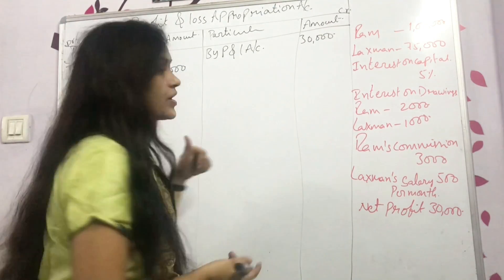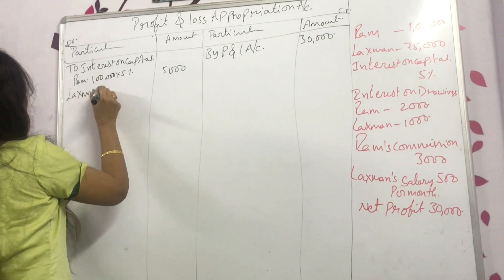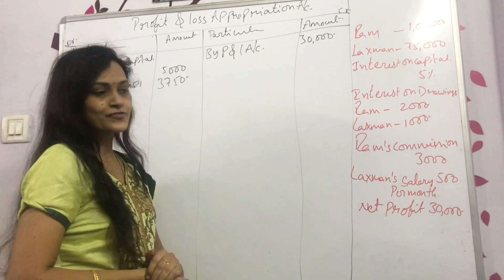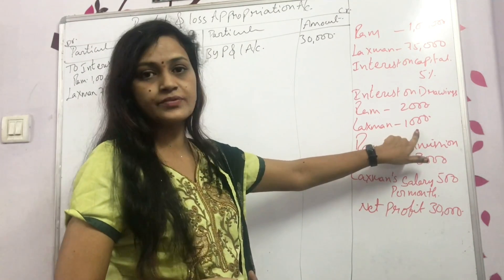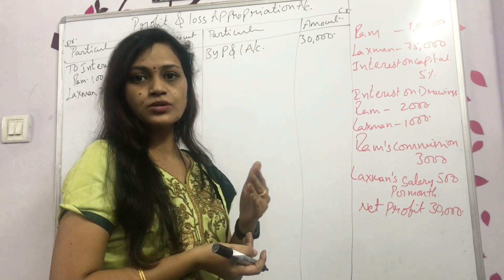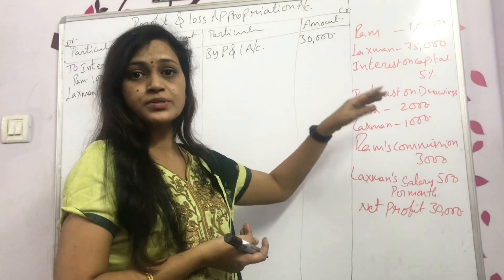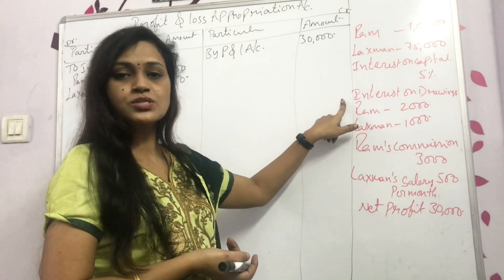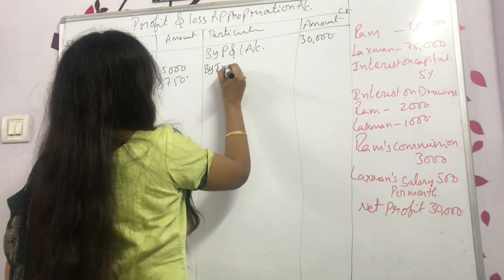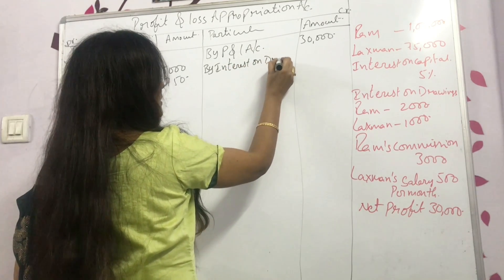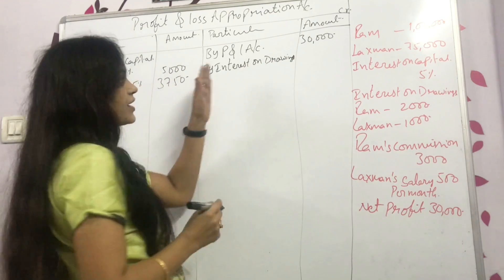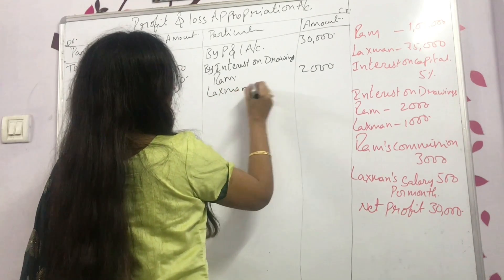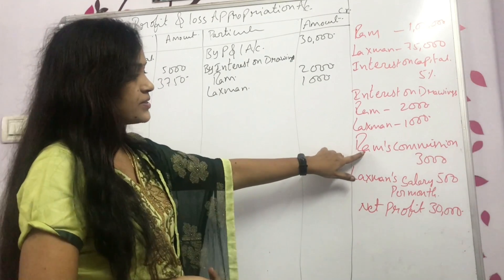For Lakshman: 75,000 at 5% gives 3,750. Next, interest on drawings — if the drawings amount is given (e.g., 30,000 or 40,000) then you calculate at the given percentage. Here the interest amount is given directly, so no calculation needed. Interest on drawings (IOD): Ram 2,000, Lakshman 1,000.